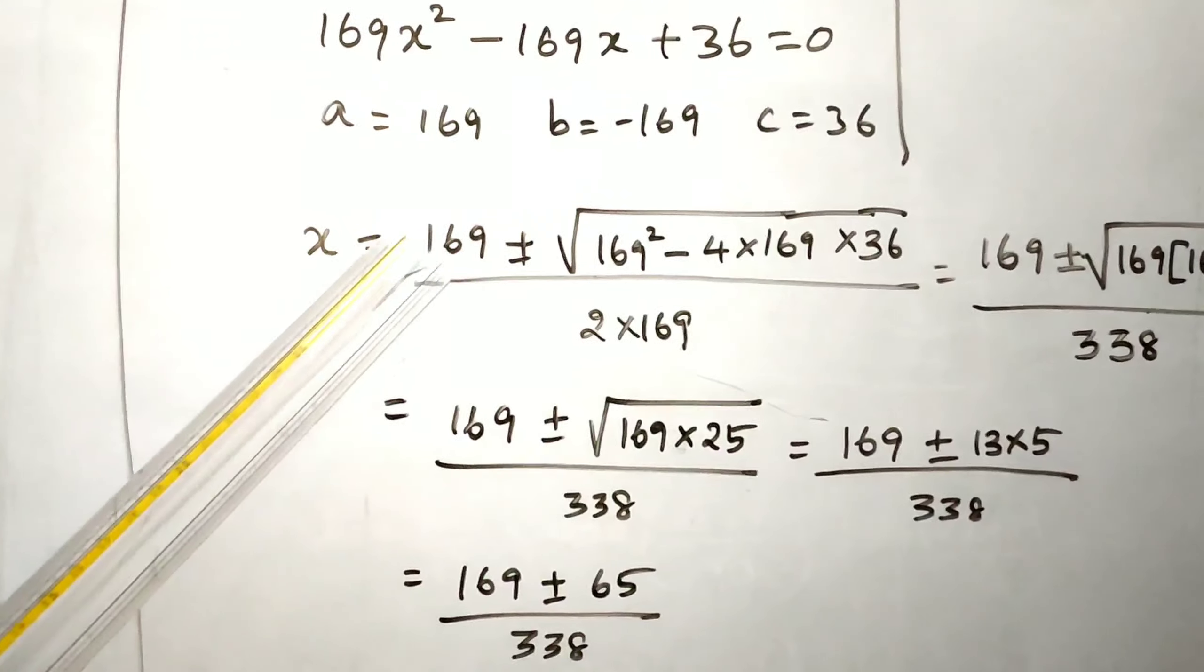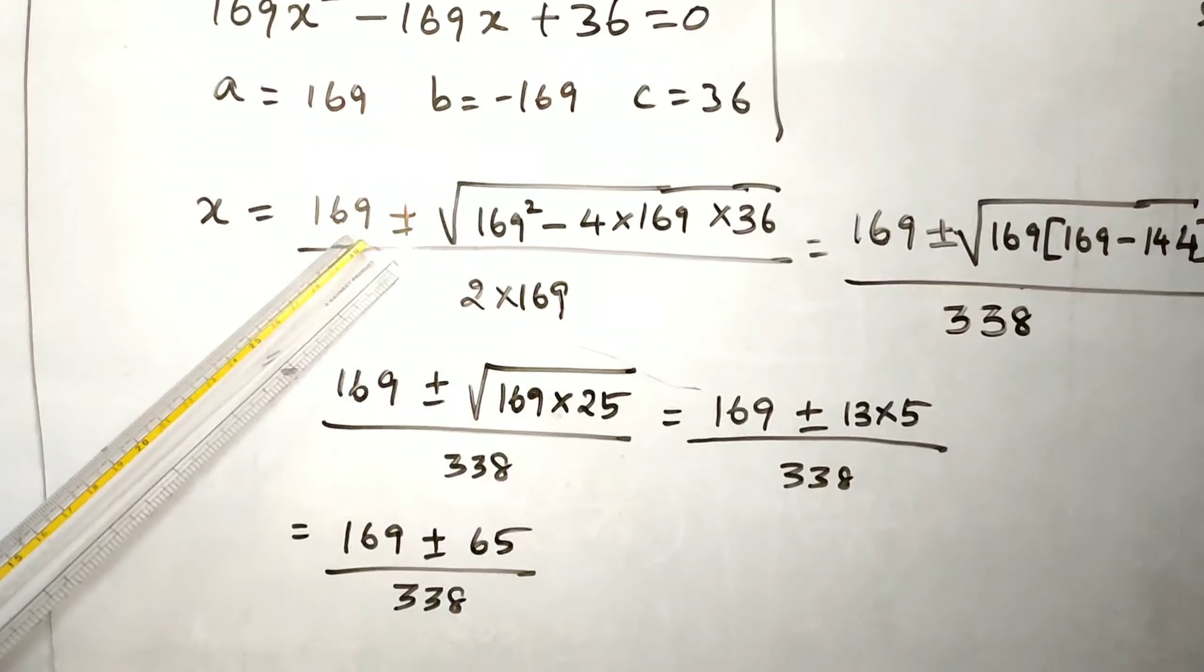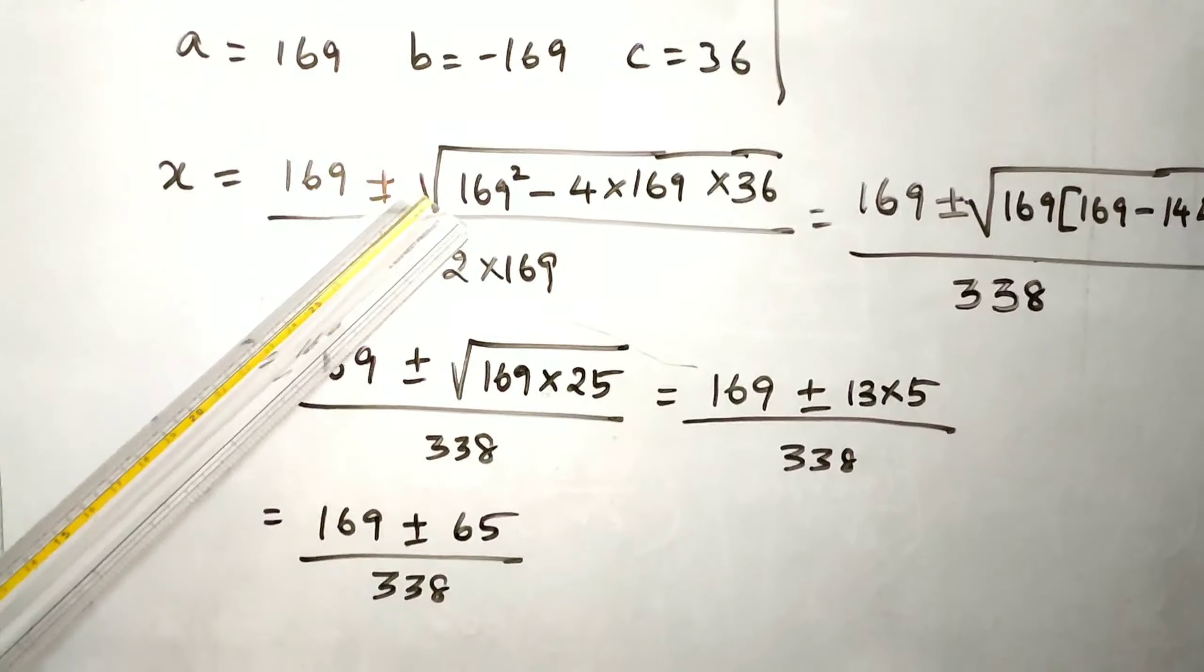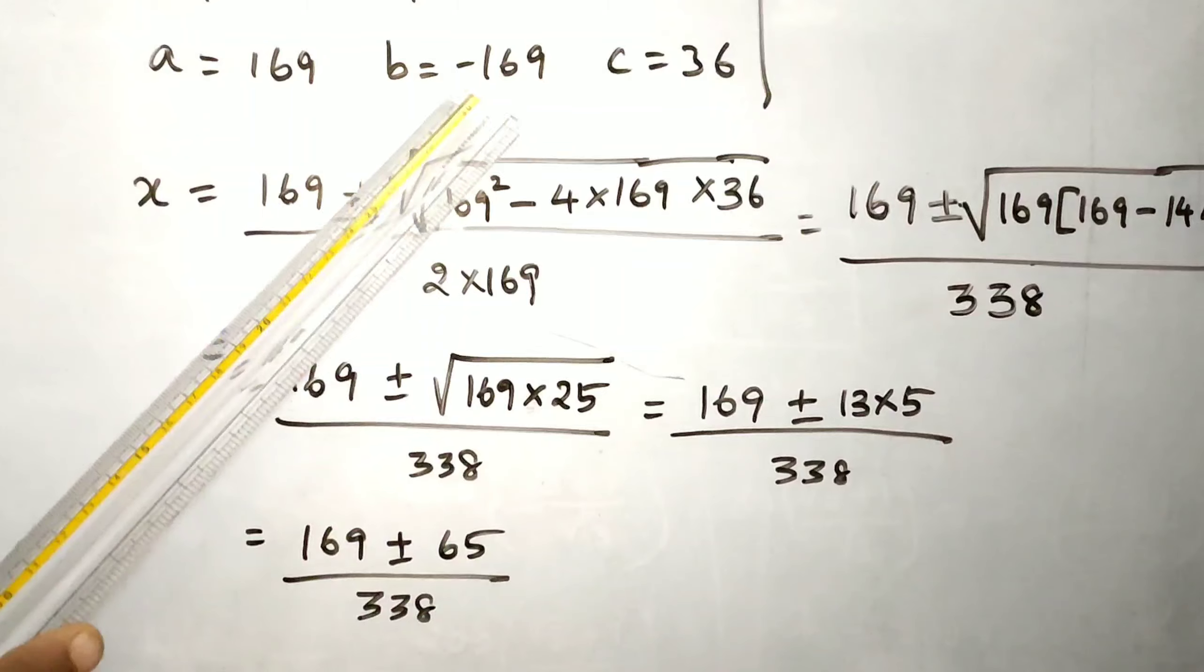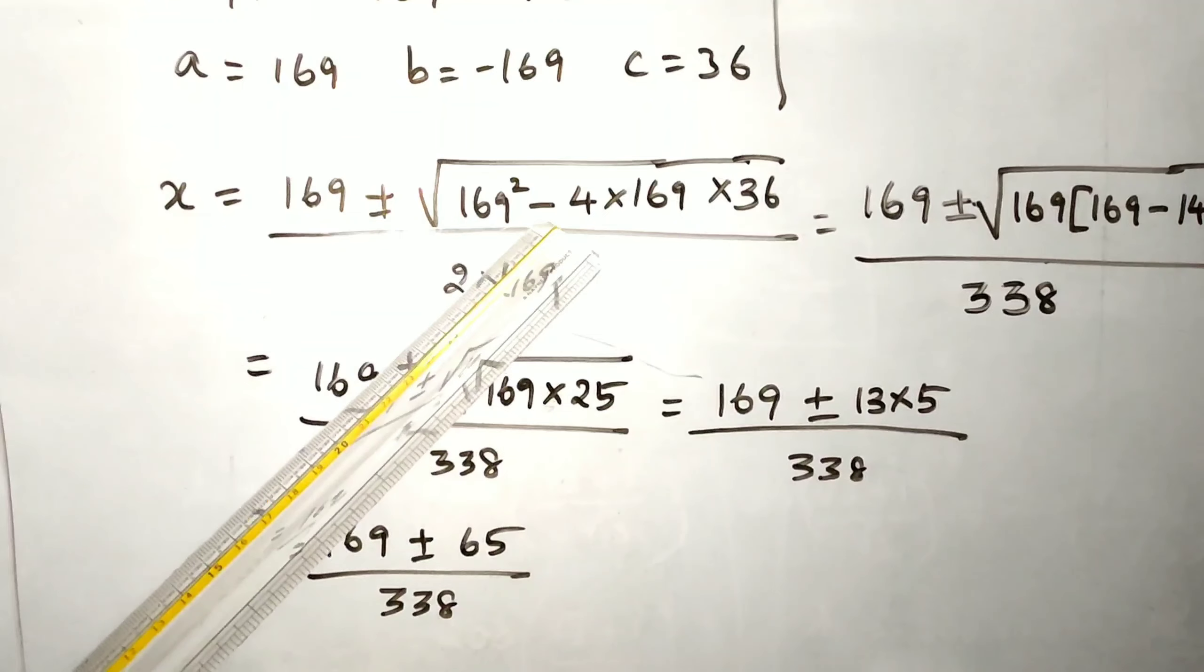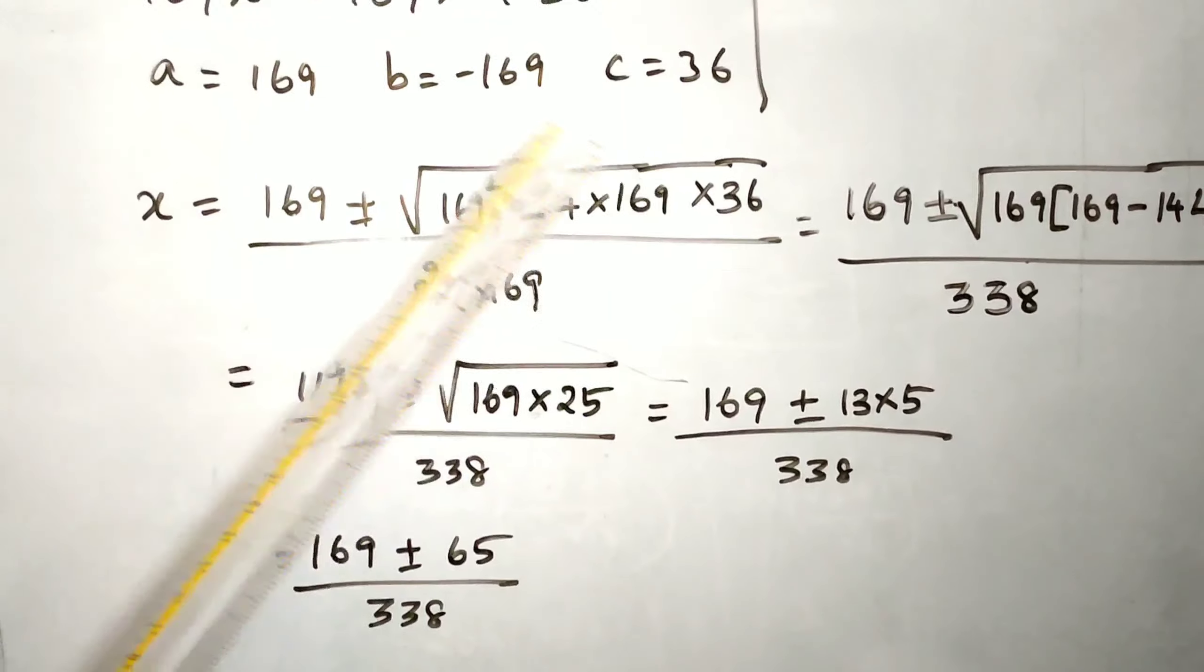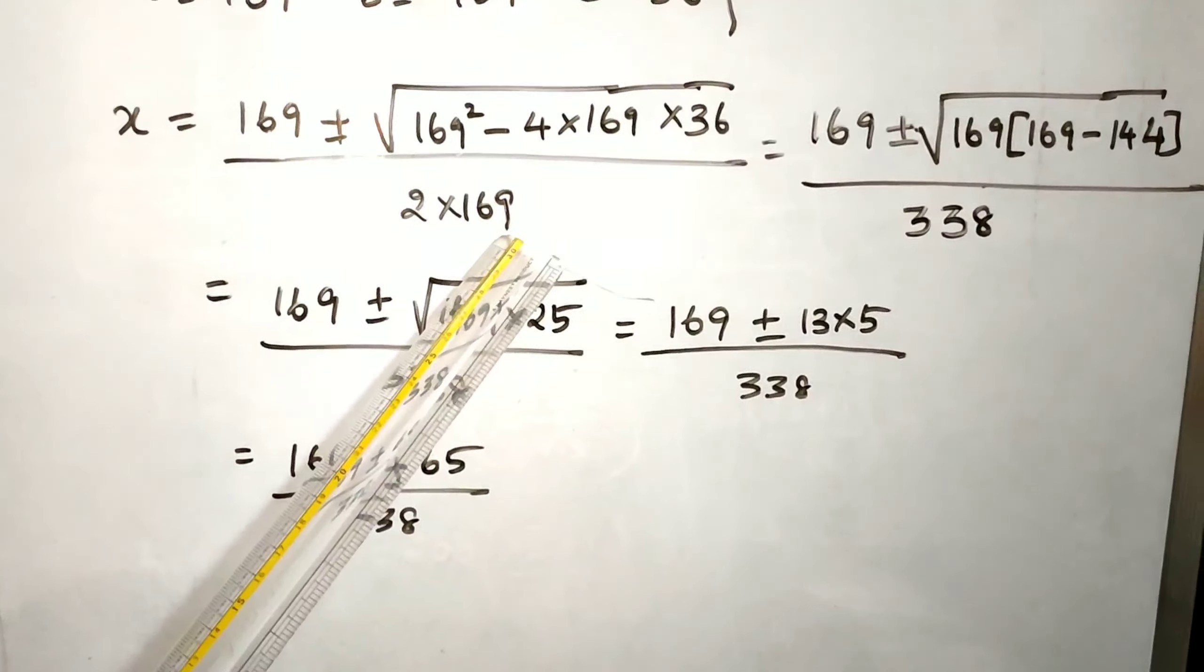x equals minus b. Minus of minus 169 becomes plus 169, plus or minus root of b squared. 169 squared, minus into minus is plus, minus 4 times a, 169, times c, 36, by 2a, 2 times 169.